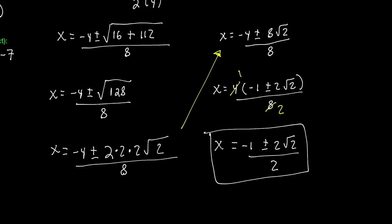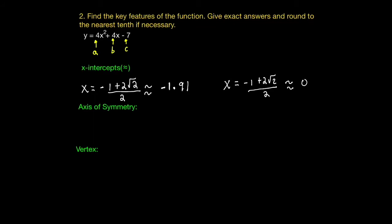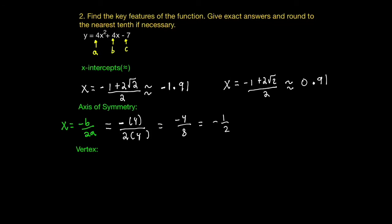Those are the exact solutions for the x-intercepts. I'm also interested in the approximations, so writing each x-intercept individually and using a calculator, the results are negative 1.91 and 0.91. Moving on to the axis of symmetry, we calculate negative b over 2a. For our example, that's negative 4 divided by 2 times 4, which is 8. So negative 4 over 8 reduces to negative one half, which is our axis of symmetry.